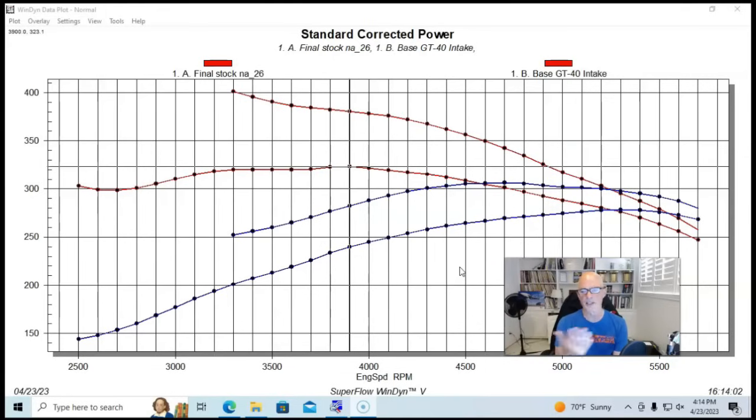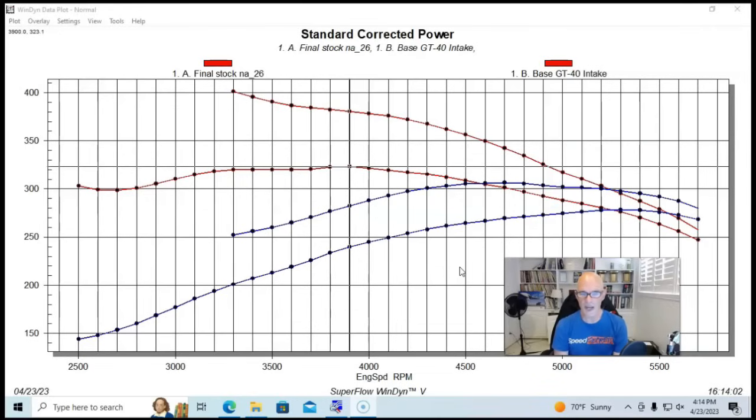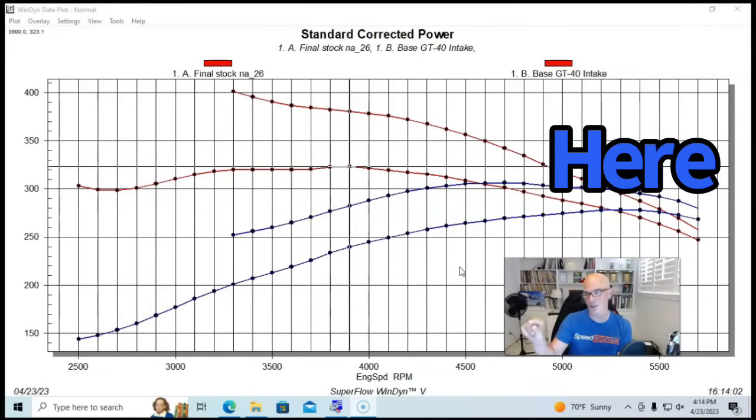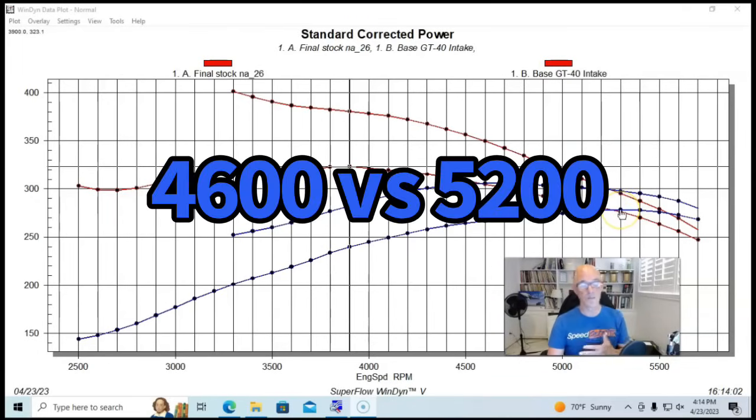The interesting thing is they tend to merge a little bit, kind of like a 4.8 and a 5.3 LS do out at the top, you know, a good bit past the power peak. Also note that they made peak horsepower at different engine speeds. The 347 made peak power much earlier than the 302 did, even with the same components, because it just needs more airflow and the things that are providing the airflow are kind of lacking in this case.